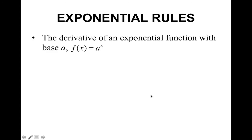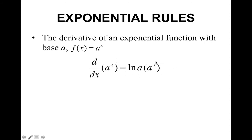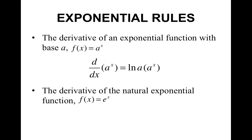Exponential functions: the derivative of an exponential function with base a, so your function is a to the x, is the natural log of a times a to the x. We could go through the whole limit process to figure out how they got this, but if you're bored one night you can do that. The derivative of the natural exponential function e to the x with respect to x is equal to e to the x — that's the same rule, since the natural log of e is 1, so we don't have to write it.